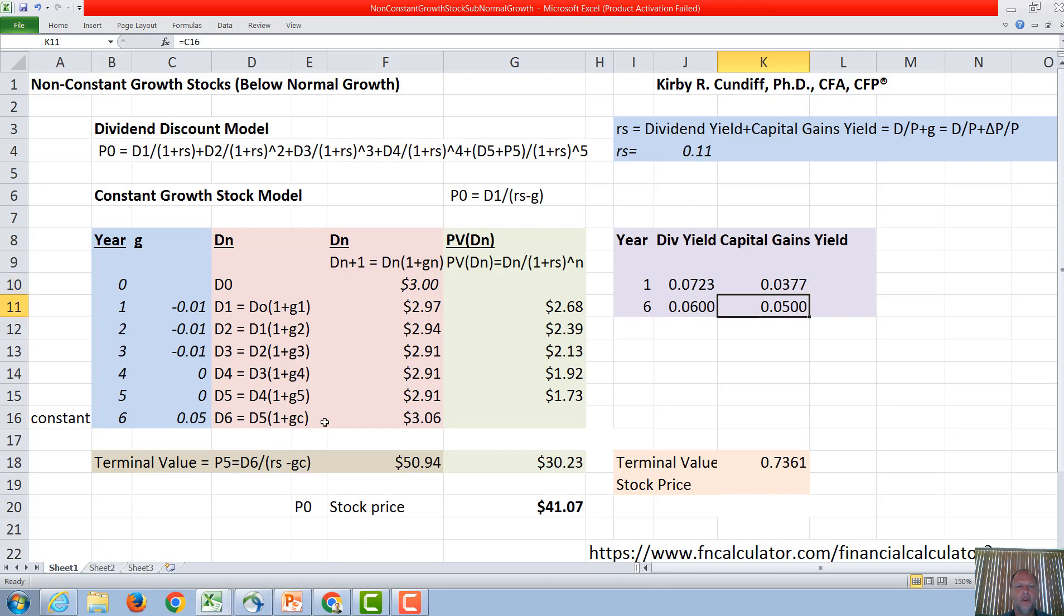And then in the final year, again, we know the capital gains yield will equal the growth rate. The growth rate plus the dividend yield has to equal the required rate of return. So the dividend yield will have to equal 11% minus 5%, or 6%.